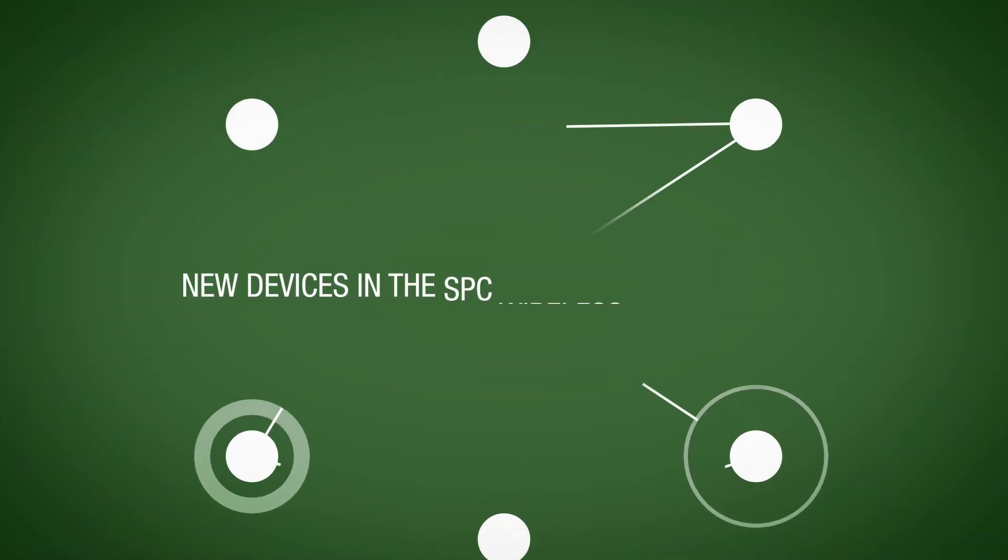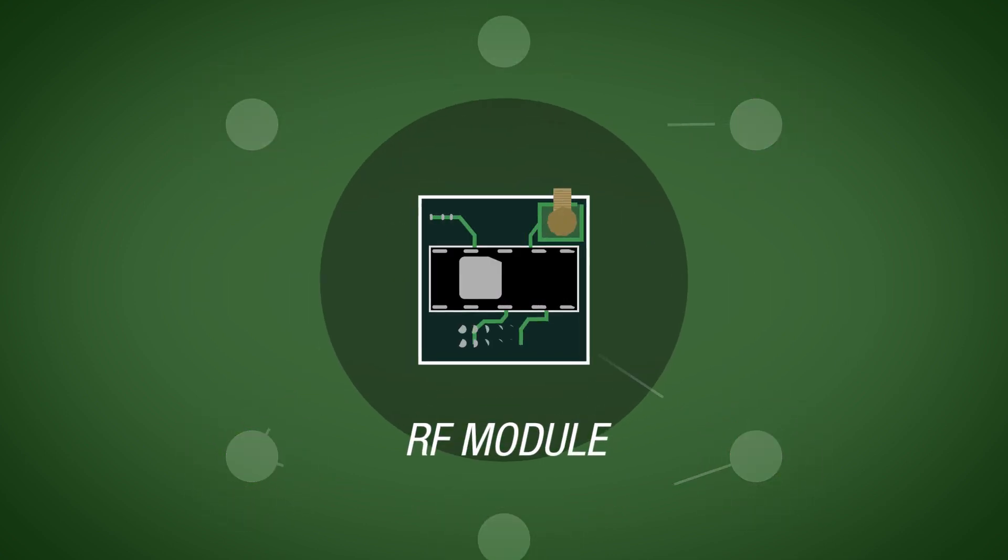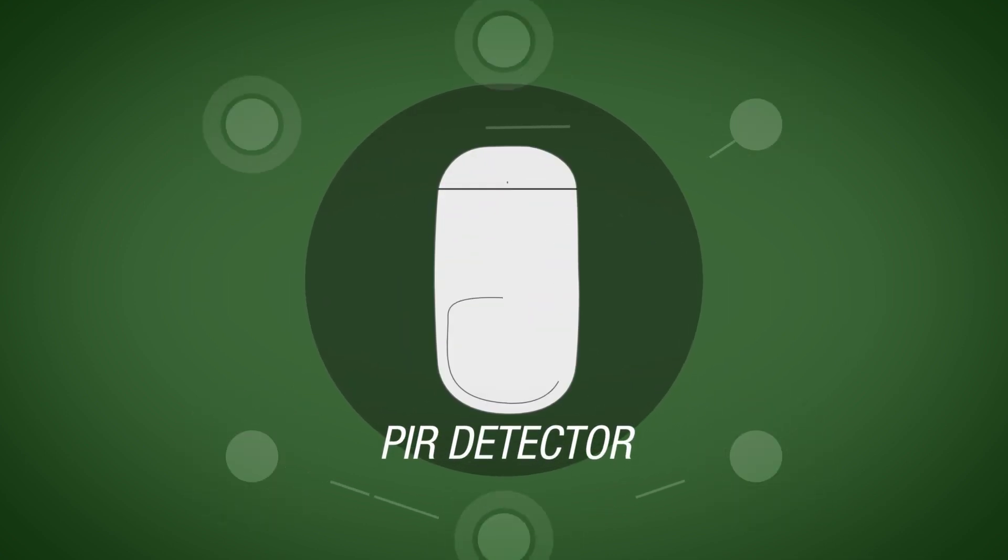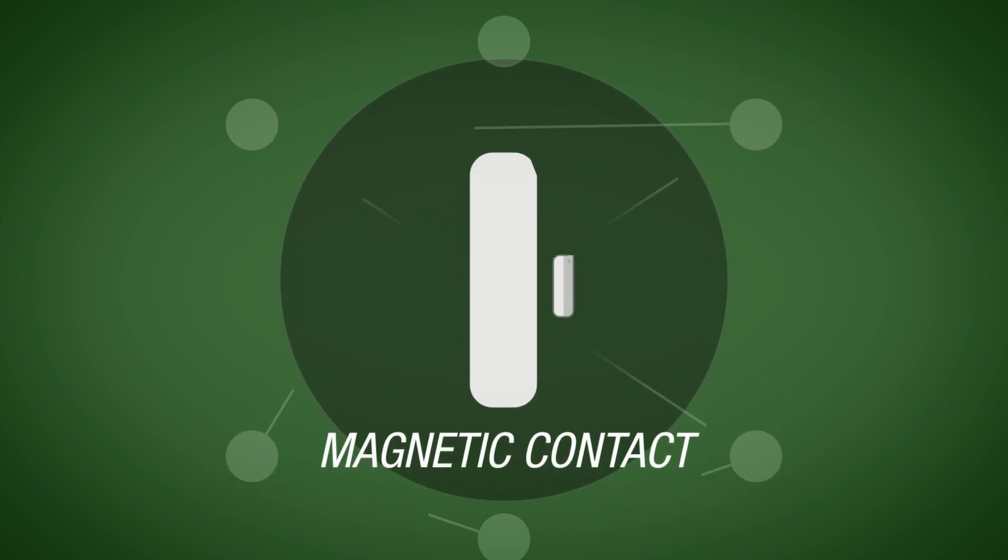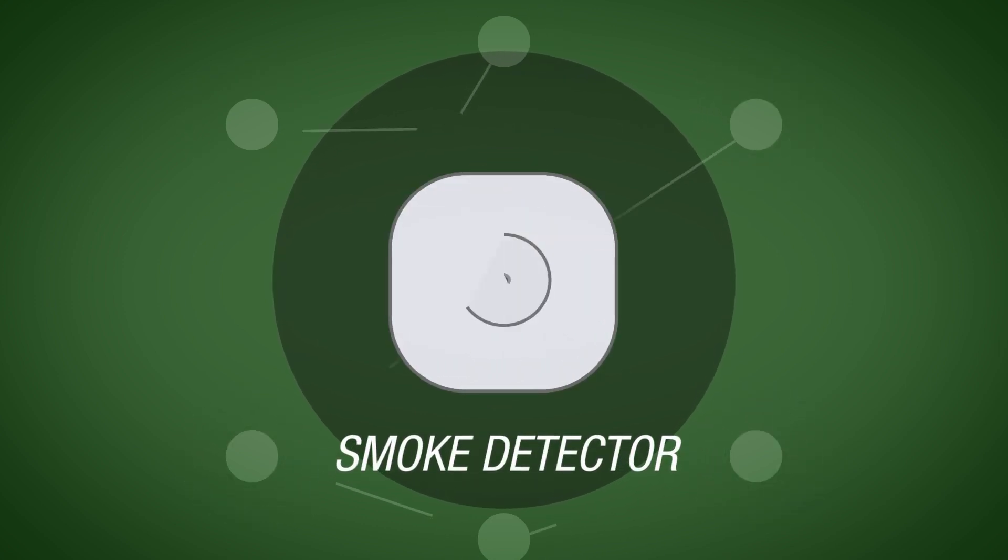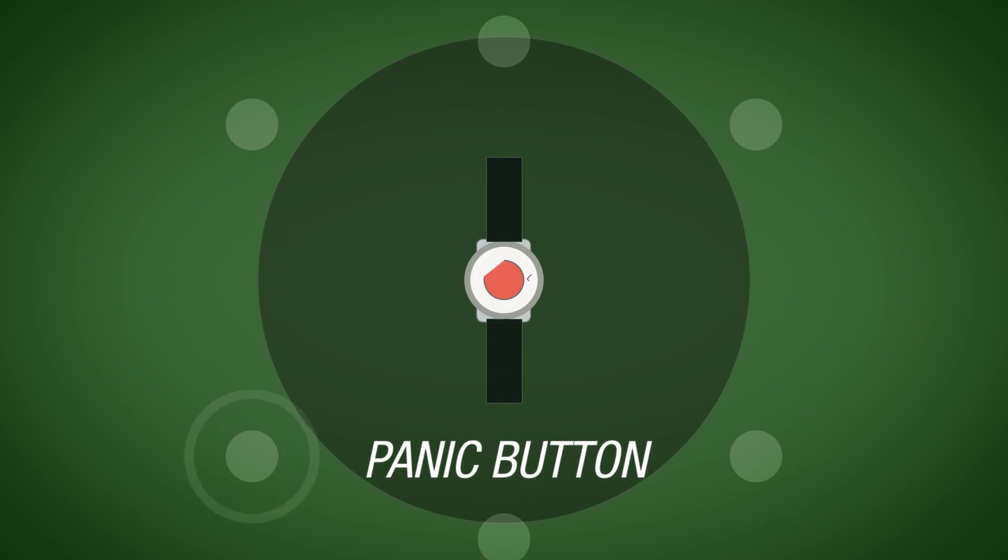Existing devices in the SPC Wireless range include an RF module, PIR detector, curtain PIR detector, magnetic contact, smoke detector, RF remote, and panic button.